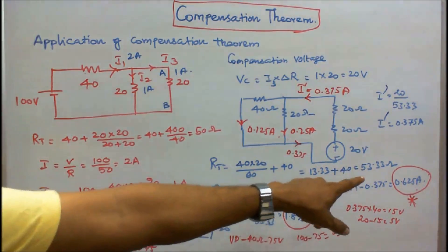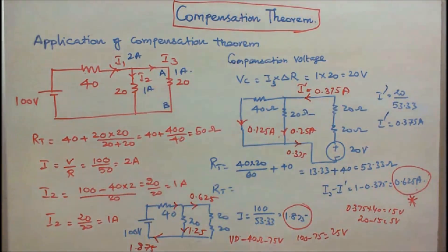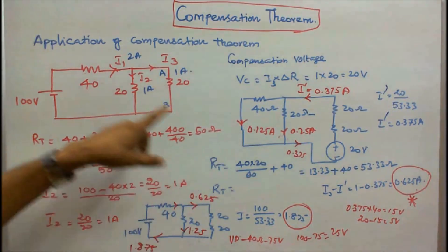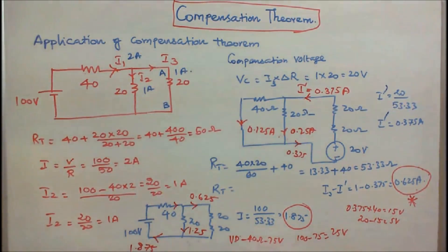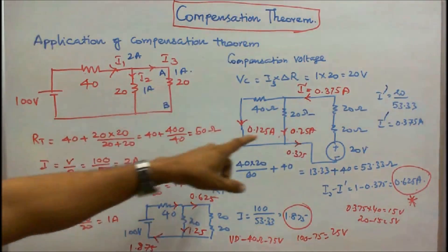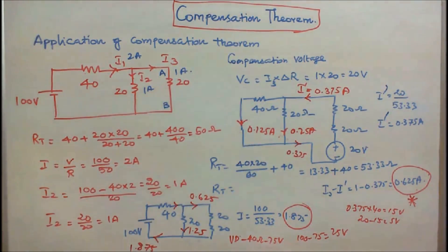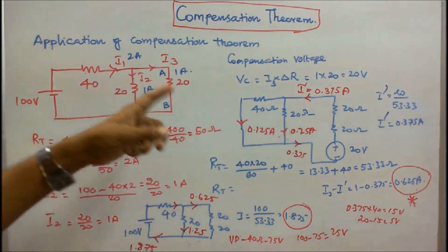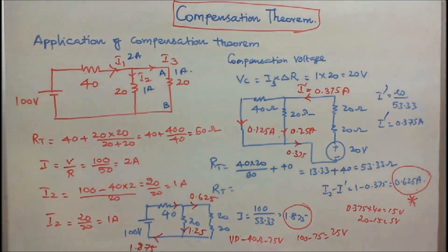I3 minus I dash equals 0.625, so the compensation theorem is verified. Similarly, 1.875 plus 0.125 equals 2. And 1.25 minus 1 equals 0.25, while 0.625 minus 1 equals 0.375. With this, I conclude my lecture. Thanks for listening.